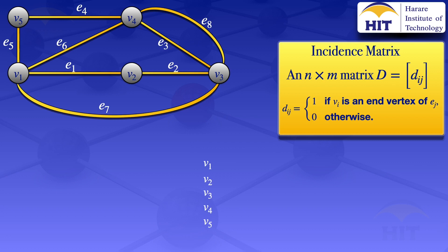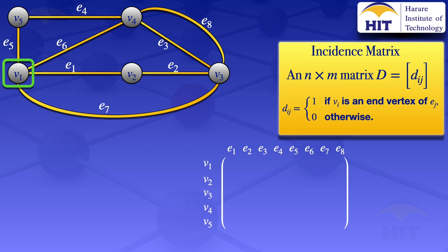We have eight edges, so our matrix will have eight columns: e1, e2, e3, e4, e5, e6, e7, and e8. Looking at vertex v1, we see that v1 is an end vertex for edges e1, e5, e6, and e7. So in our matrix we place ones at e1, e5, e6, and e7, and zeros on all other elements.